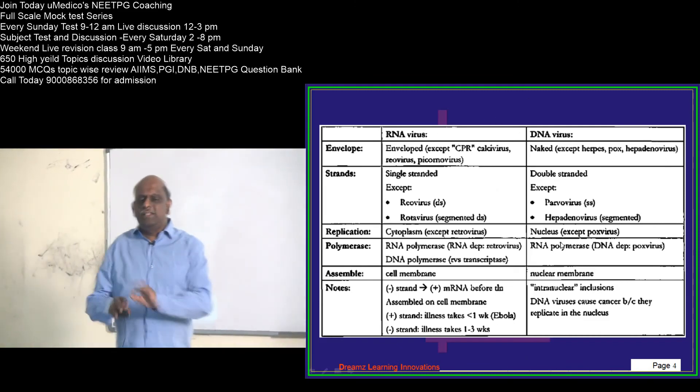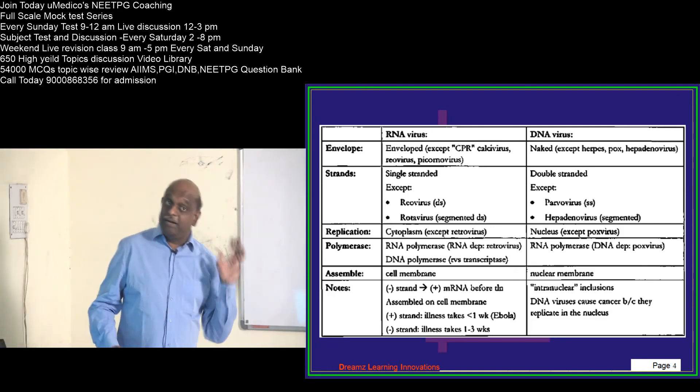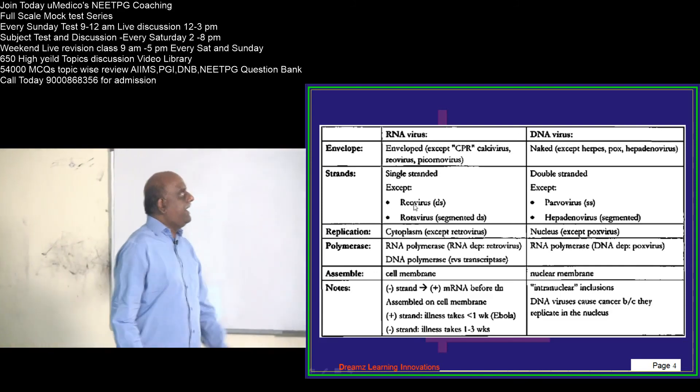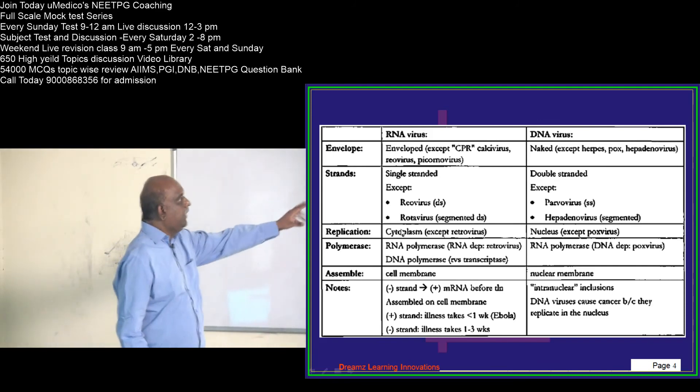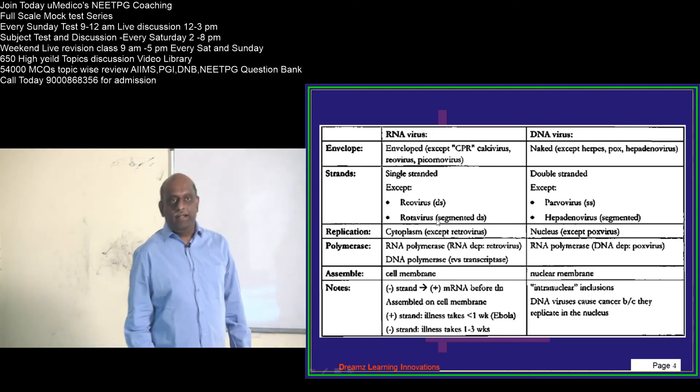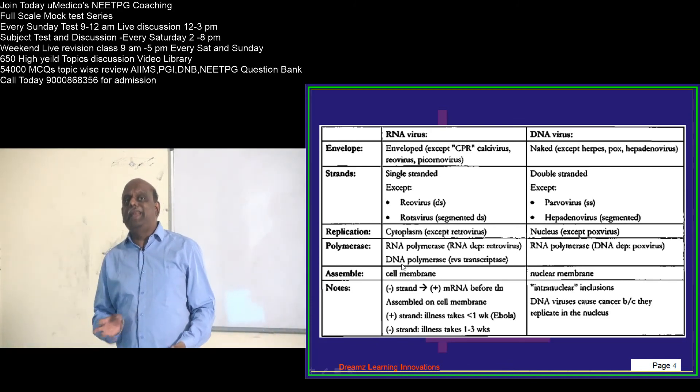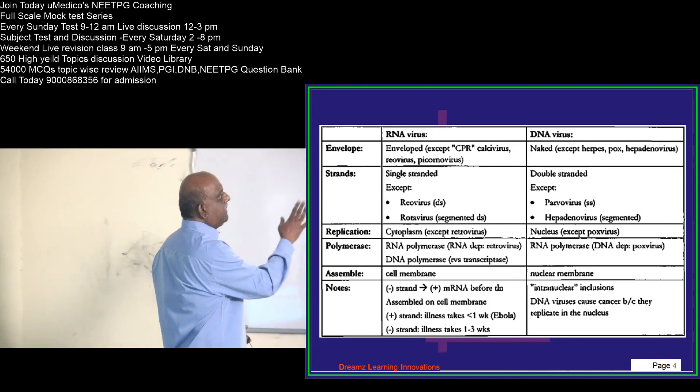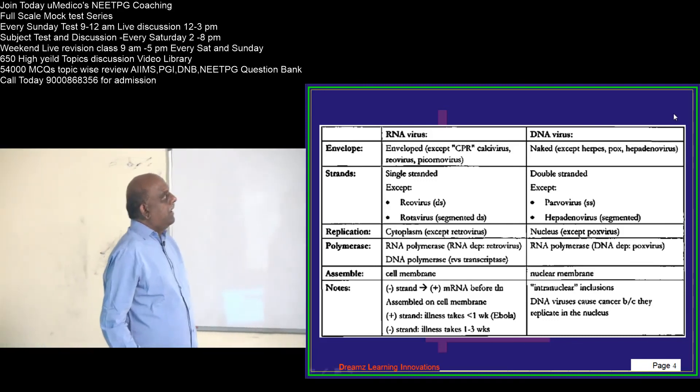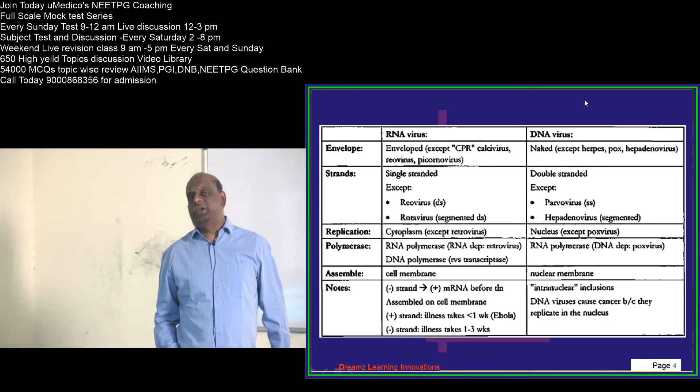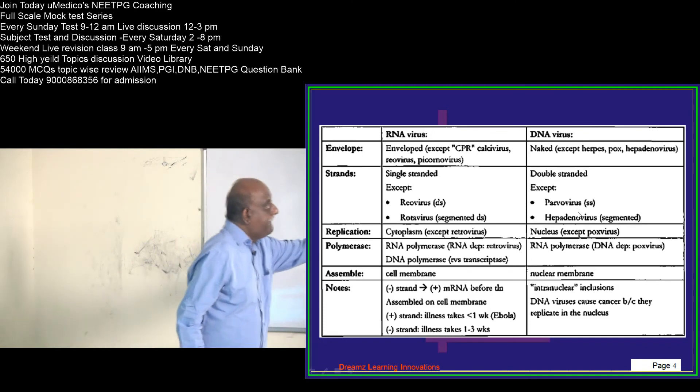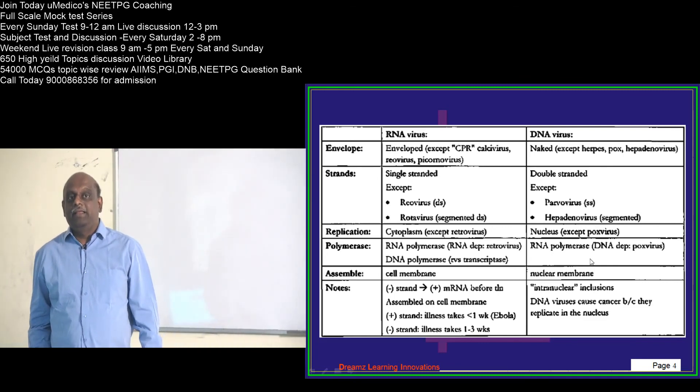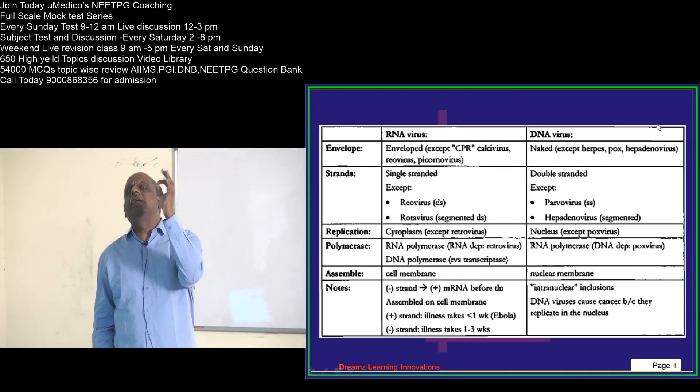RNA viruses are all single stranded. DNA viruses are double stranded, but there are exceptions. Which RNA virus is not single stranded but double stranded? Reovirus, and rotavirus which has got segmented DNA. If you look at DNA, all are double stranded. What is an exception? Parvovirus which is single stranded, and hepadenovirus which is segmented.